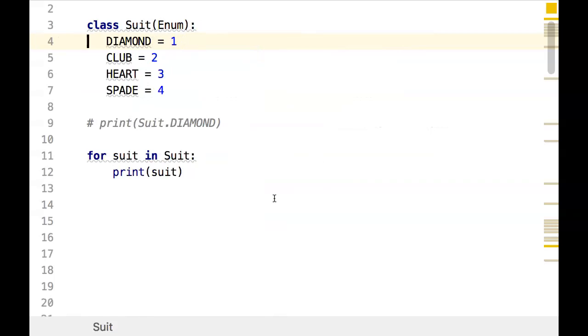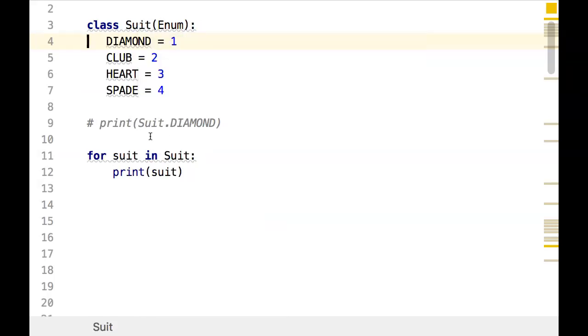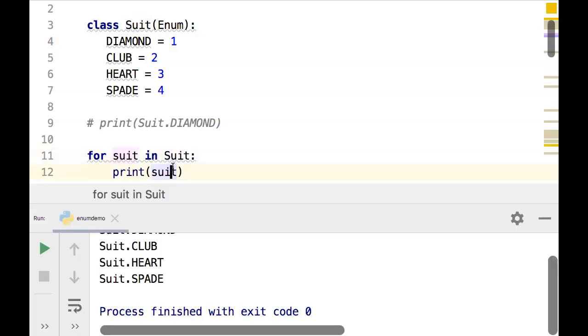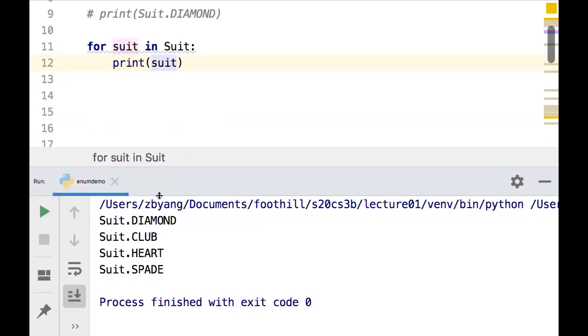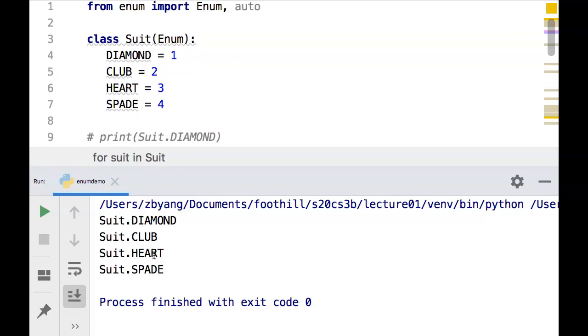And the next thing we can do is that now the suit enum can be looped over just like a list. So we can say for each of the suit inside Suit, we can print it out. If we do that, we get all of the suits that are defined here: diamond, club, heart, spade. Very convenient.